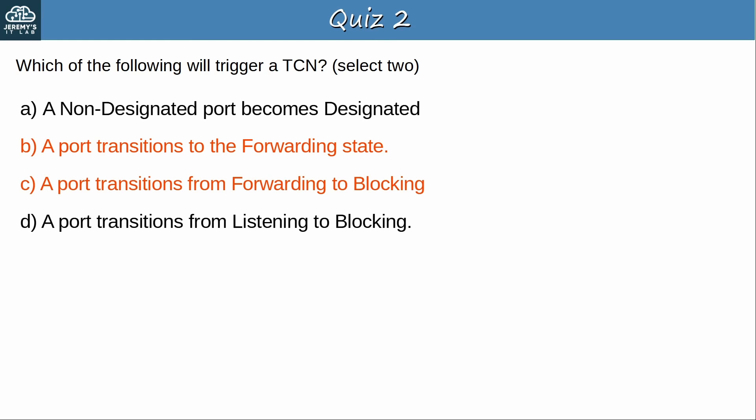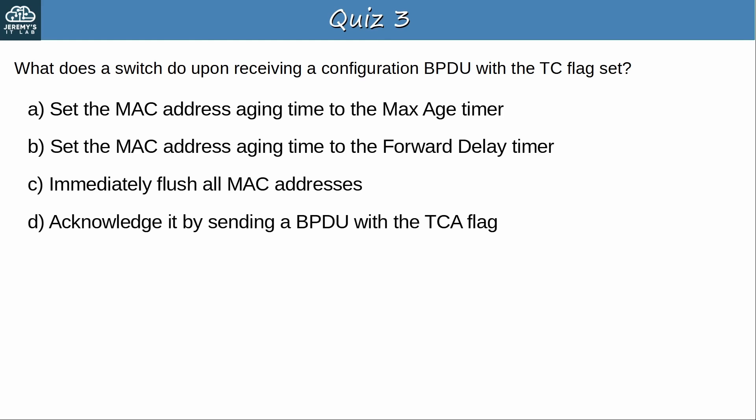Question 3: What does a switch do upon receiving a configuration BPDU with the TC flag set? The answer is B — it sets the MAC address aging time to the forward delay timer, so 15 seconds by default. If there is a change in the STP topology, it might be necessary for switches to relearn some of the addresses in their MAC address table, as the old information may no longer be valid. By rapidly aging out MAC addresses, it will prevent switches from forwarding frames using old entries that are no longer valid.